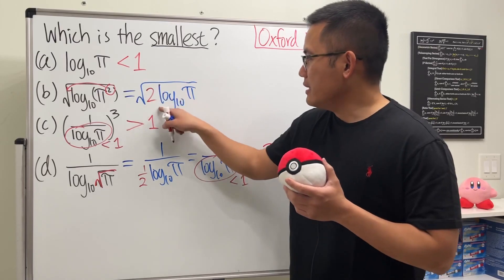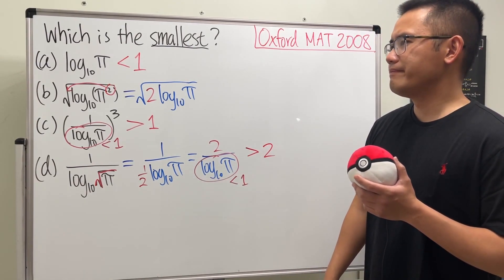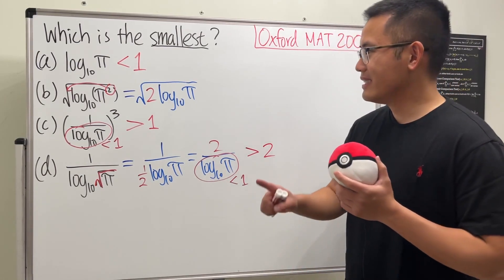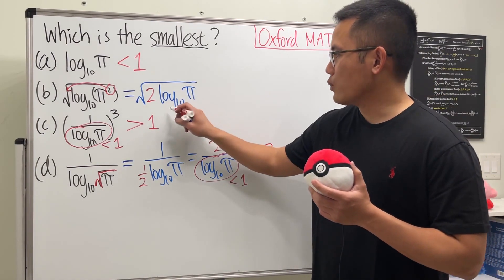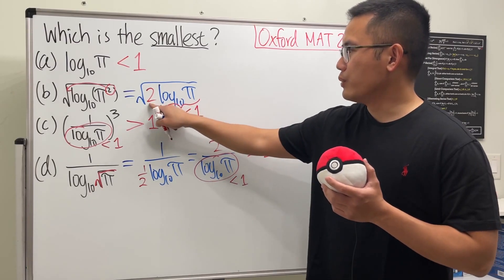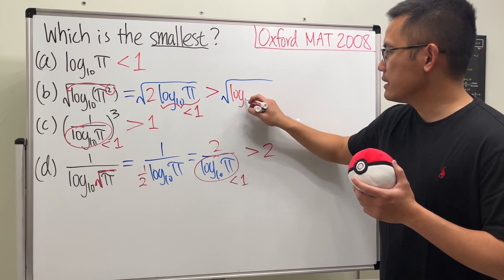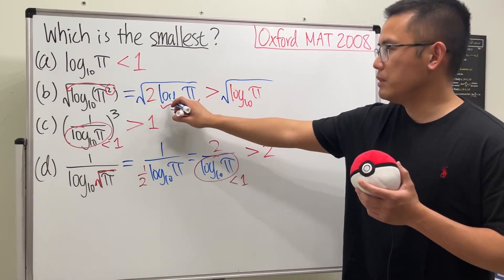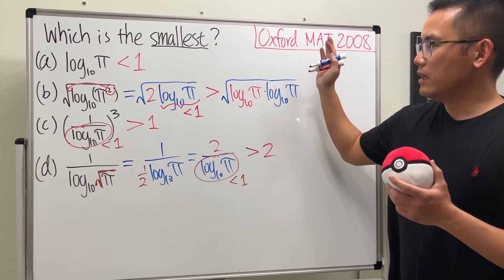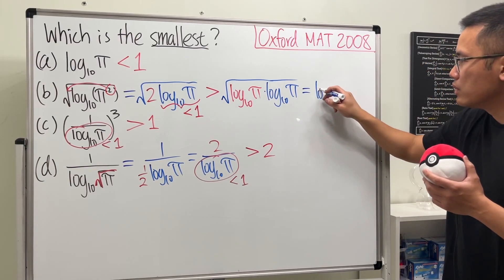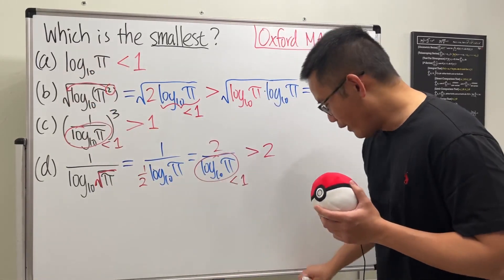Let's utilize this one more time — log base 10 of pi is less than one. Therefore 2 is bigger than log base 10 of pi. I'm going to replace the 2 with log base 10 of pi, and keep log base 10 of pi as it is. We have this times that inside the square root, and of course they are positive so they cancel. In fact this expression is just going to be equal to log base 10 of pi.